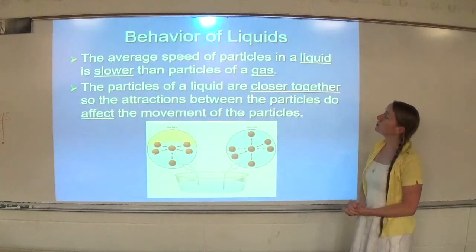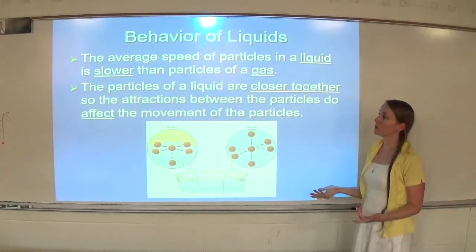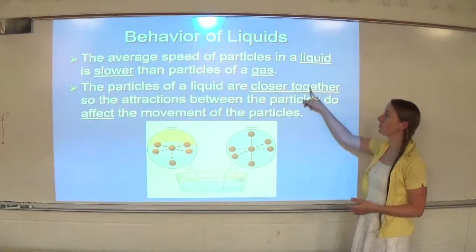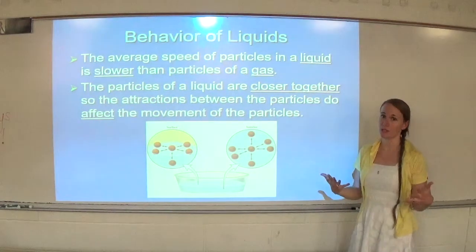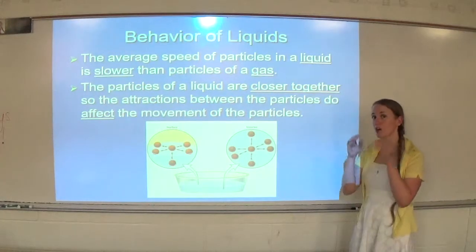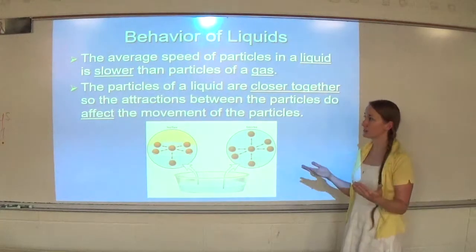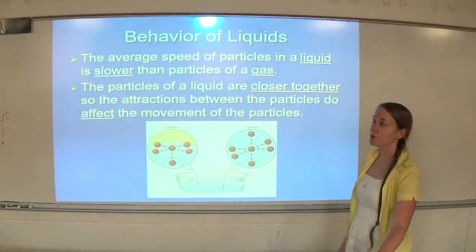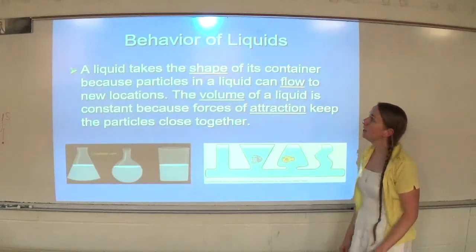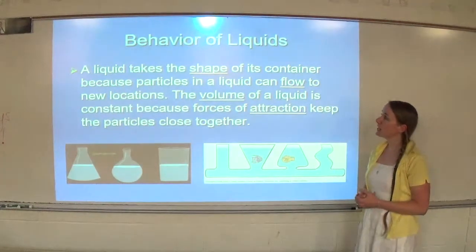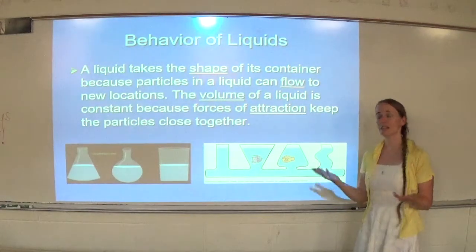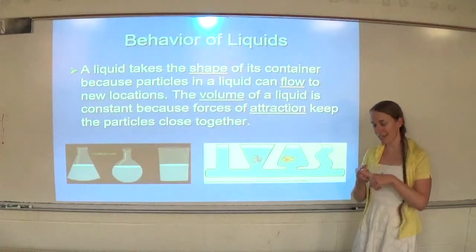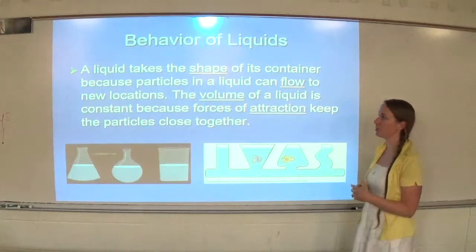The average speed of particles in a liquid is slower than particles of a gas. The particles of a liquid are closer together, so the attractions between the particles do affect the movement. Particles of a liquid are closed together. They are just random, but they are moving slower than a gas. A liquid takes the shape of its container because particles in a liquid can flow to new locations. Anything that can flow is called a fluid, and gases and liquids are fluids and can flow, solids or not.